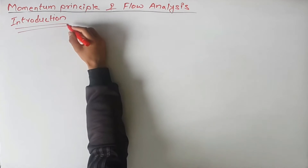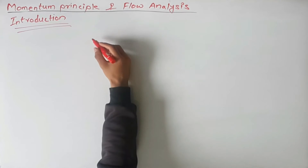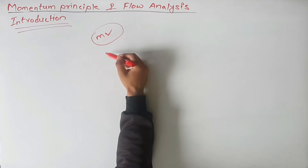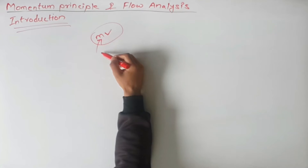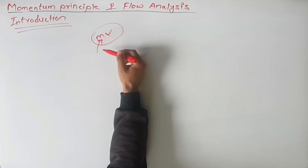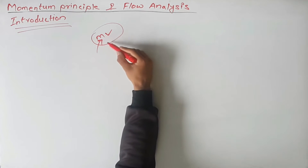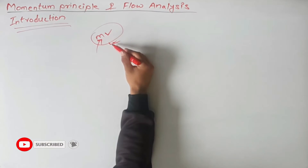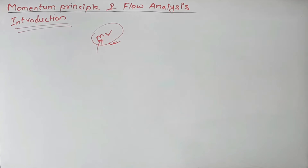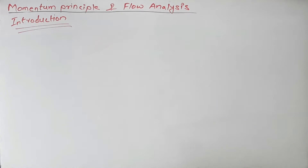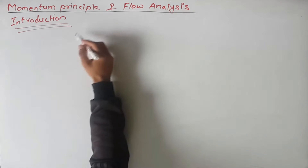First, momentum is the product of mass and velocity. But in fluid mechanics, mass is used differently in flow analysis. In solid mechanics we use mass in one way, but in fluid mechanics we use it differently. The momentum equation is a statement of Newton's second law.